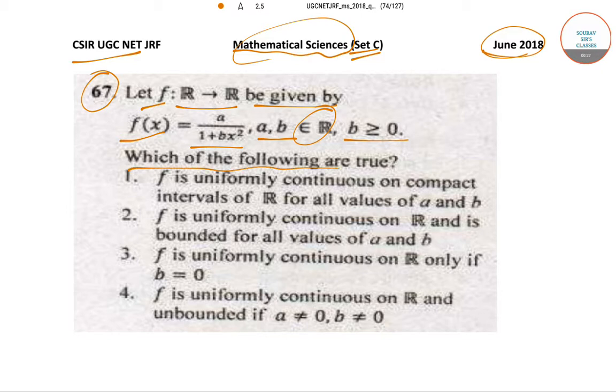Which of the following statements are true? Option 1: f is uniformly continuous on compact intervals of R for all values of a and b. Option 2: f is uniformly continuous on R and is bounded for all values of a and b.